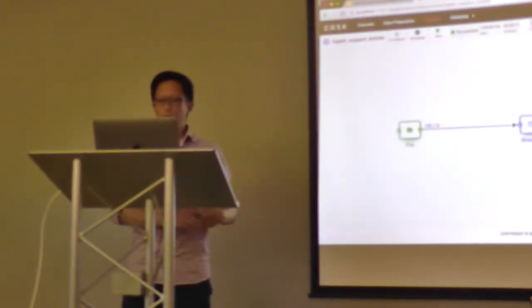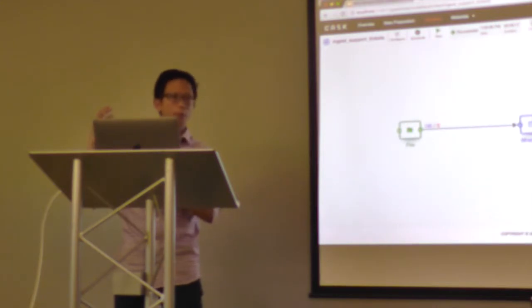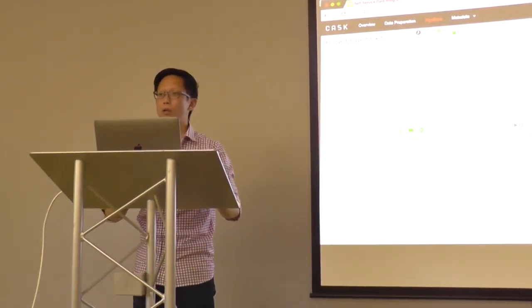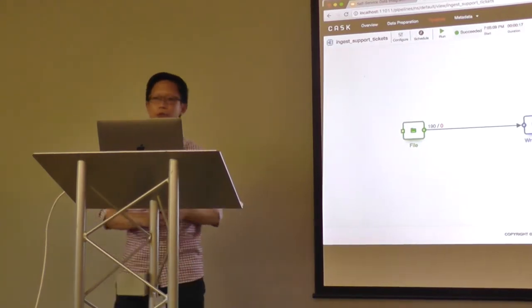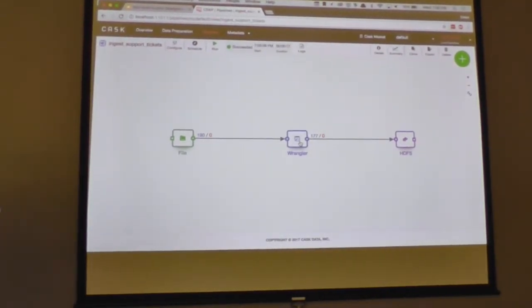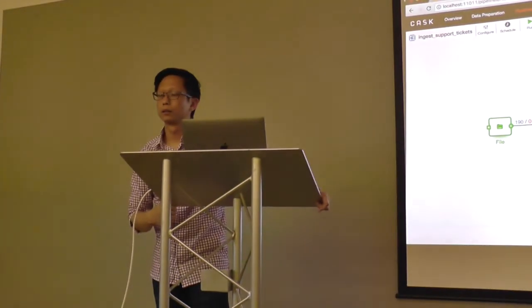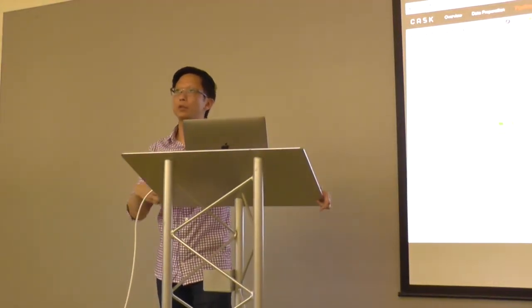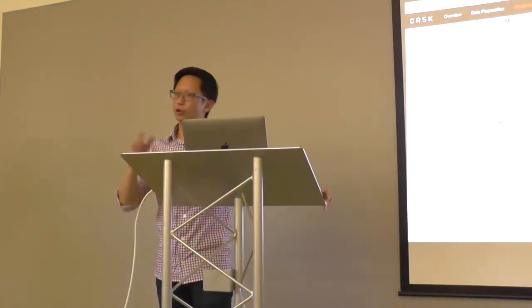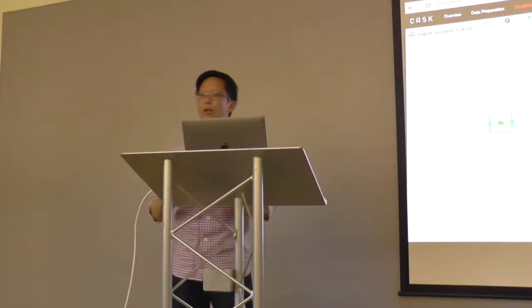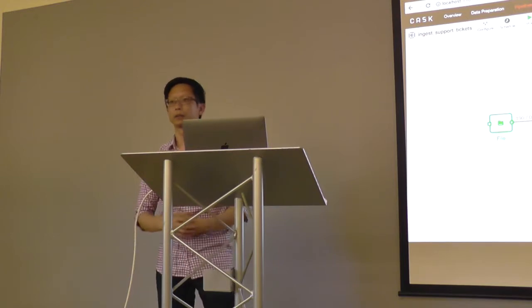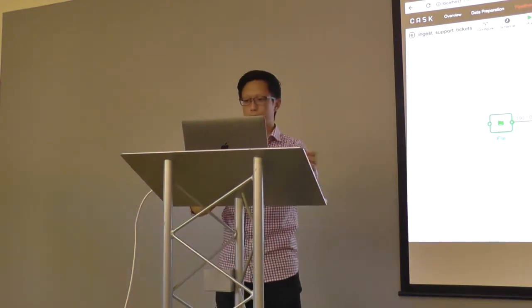We've now ingested and prepared the data, so it's time to build the machine learning code. A question: why is there a difference between 177 and 190 records — is there data loss? No, we filtered out certain records. Regarding unmatched records between the MySQL database and the log file, you can handle that in several ways: you can drop the record, control what happens, or send it to an error stream — as mentioned earlier — to preserve that record for review.